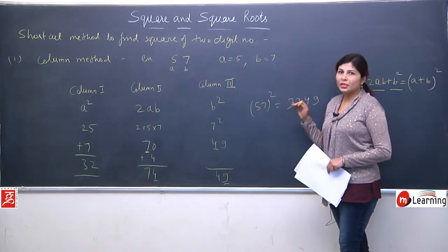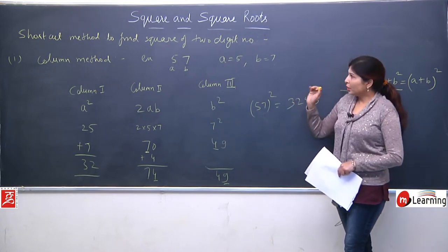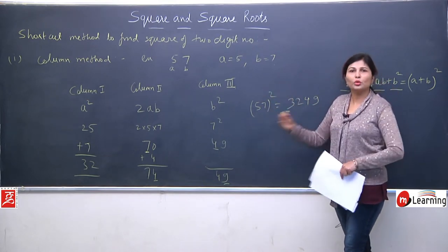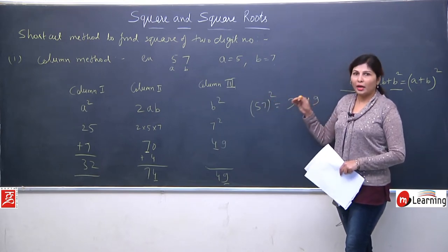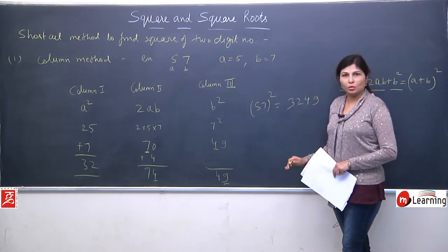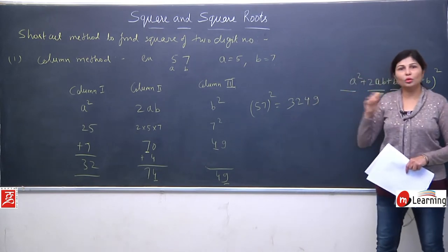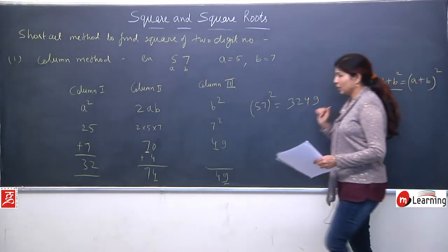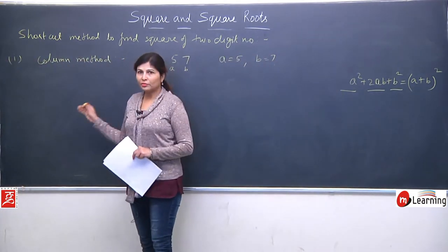The first time it may feel a little inconvenient, but we'll do 3-4 questions on this and it will become comfortable. If you have questions like 62², 89², or 91², you can solve using previous properties or the column method. If the question specifically says 'using column method,' you must apply it.